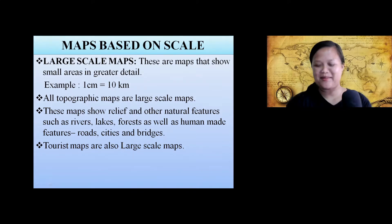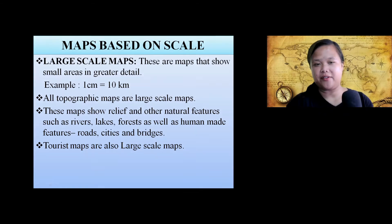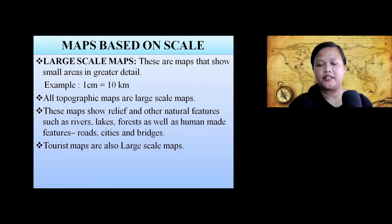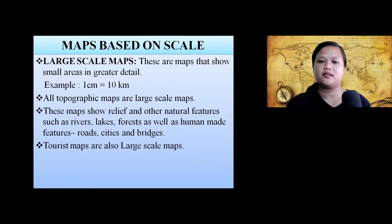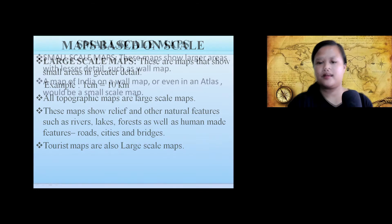Topographic maps show the details of the land surface or land area. They show relief and other natural features such as rivers, lakes, forests, as well as human-made features like roads, cities, and buildings. Tourist maps are also large scale maps.